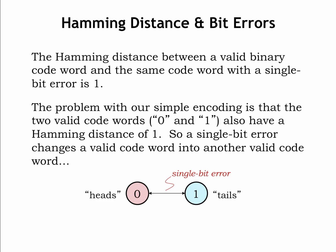The difficulty with our simple encoding is that the two valid codewords, 0 and 1, also have a hamming distance of 1, so a single-bit error changes one valid codeword into another valid codeword.